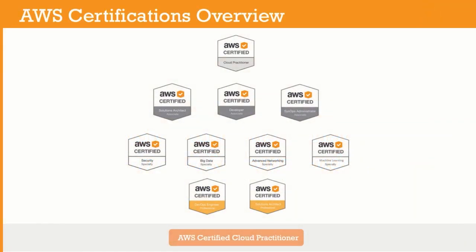As of today, there are 10 certifications available. This course covers the AWS Certified Cloud Practitioner. The next level is the Associate certifications: Solutions Architect Associate, Developer Associate, and SysOps Administrator Associate. Following that are Specialty exams: Security, Big Data, Advanced Networking, and the newer Machine Learning Specialty. After those come the Professional level certifications.